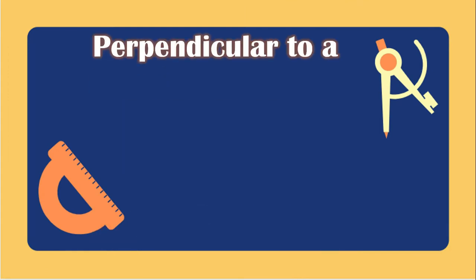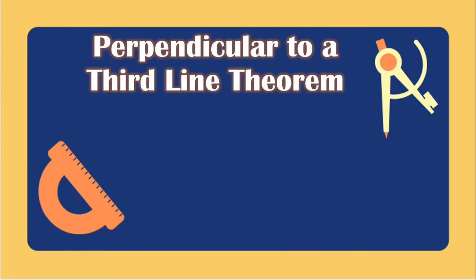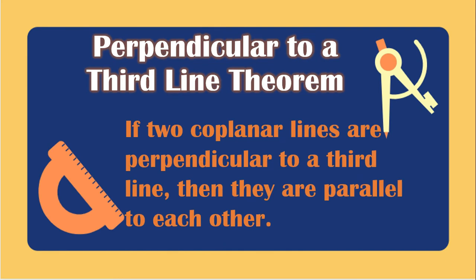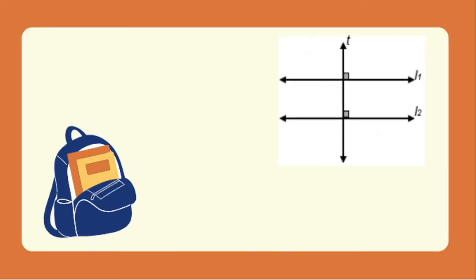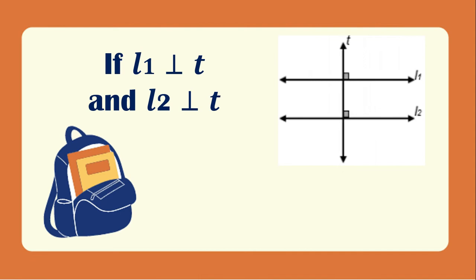The perpendicular to a third line theorem states: if two coplanar lines are perpendicular to a third line, then they are parallel to each other. In this figure, line 1 is perpendicular to line T and line 2 is also perpendicular to line T. Therefore, line 1 is parallel to line 2.